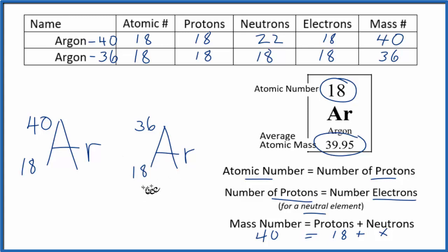On the periodic table, we have a notation that takes a weighted average of all of the isotopes for the element.